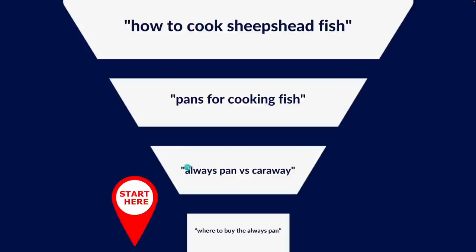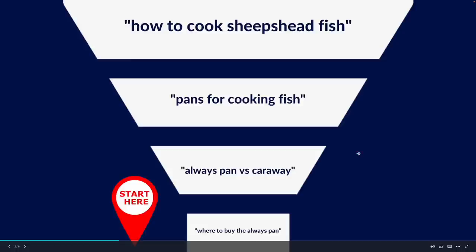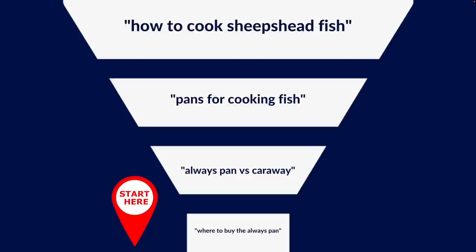Here's an example for a business that sells pans for cooking — it's called the Always Pan. I've identified keywords at each stage of the searcher journey. At the bottom of the funnel we have 'where to buy the Always Pan.' This is a very transactional keyword with transactional intent. When someone searches this, they're very close to actually making a buying decision. So we really want to attack this keyword right away. We build our whole strategy around these bottom of the funnel keywords.